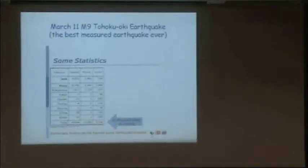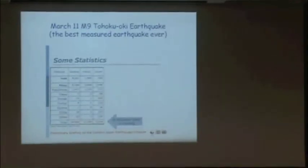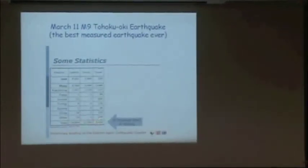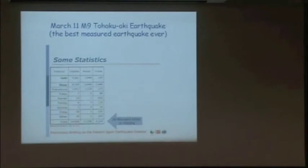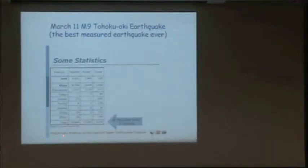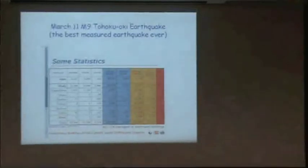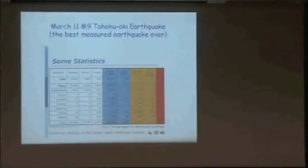Some statistics about the Tohoku earthquake: the Haiti earthquake was about a thousand times smaller. There were about 26,000 people killed or missing, most killed by the tsunami. From the point of view of buildings, there were about 360,000 damaged or destroyed, and most of those were damaged by the tsunami, not by the shaking of the earthquake.